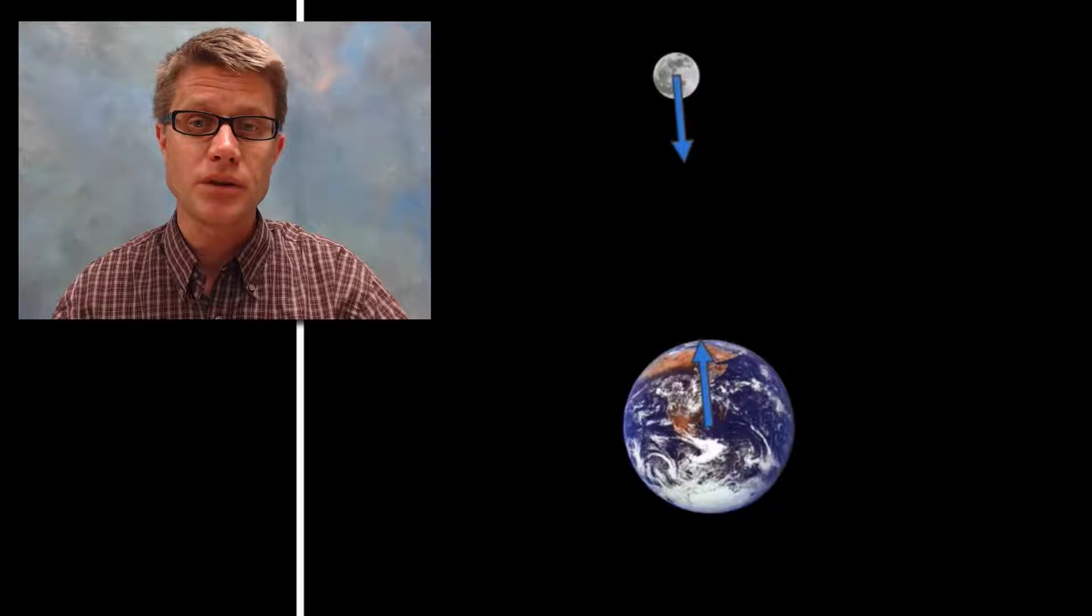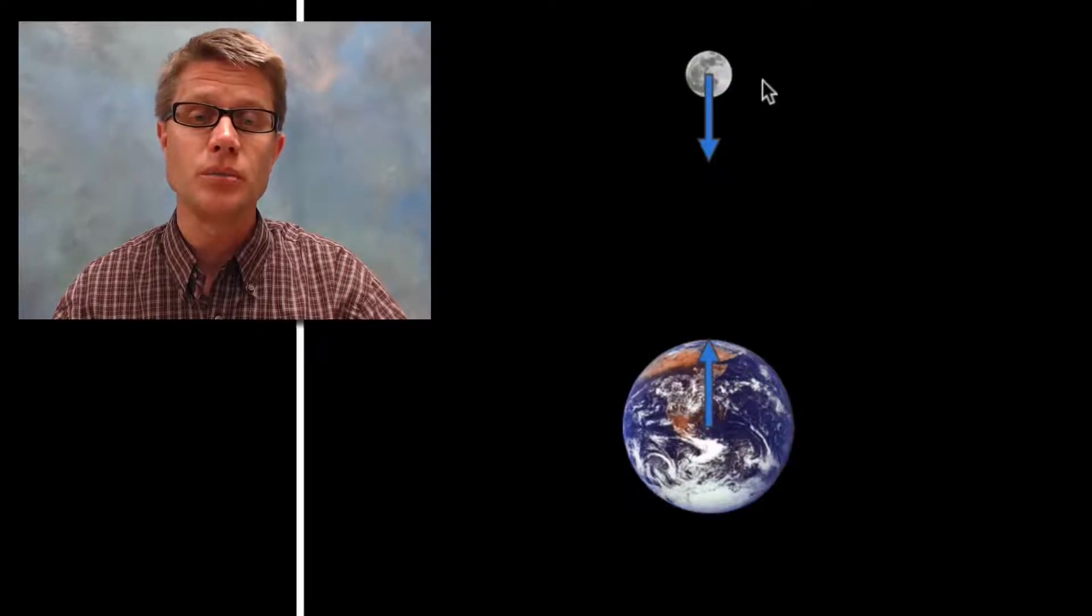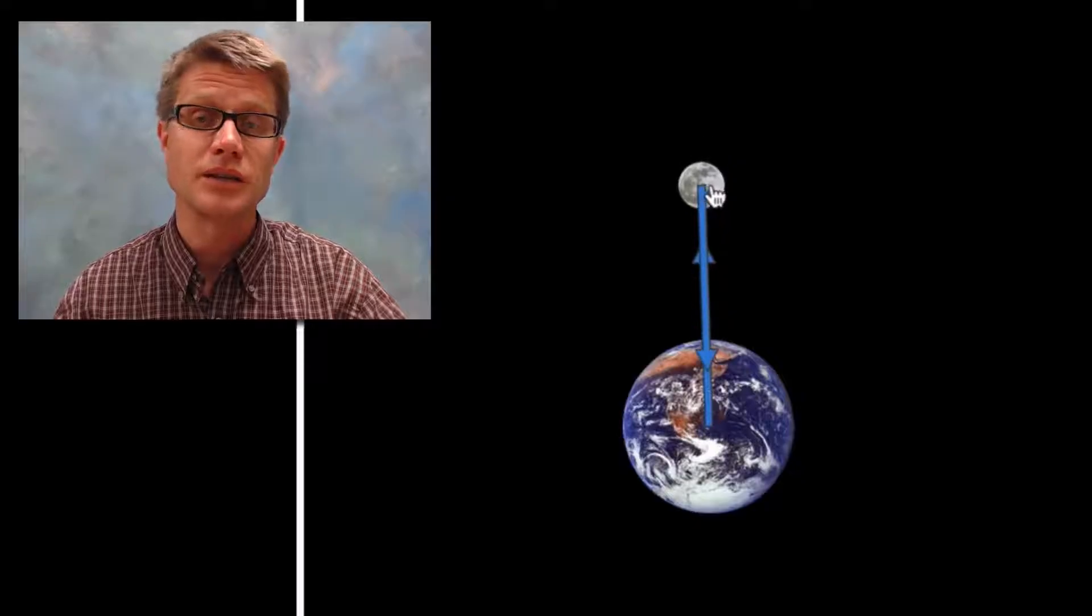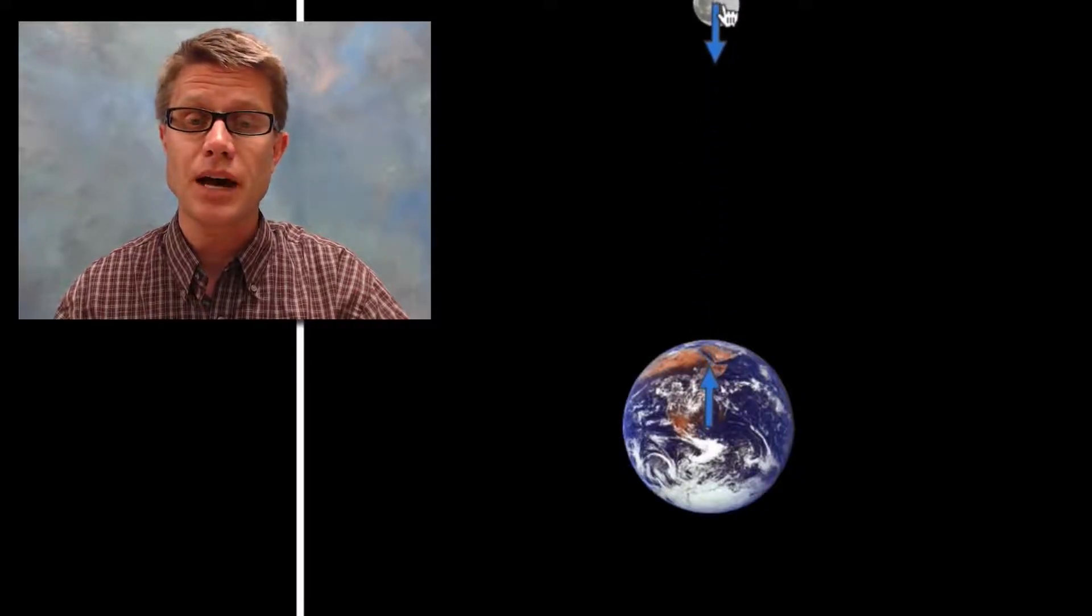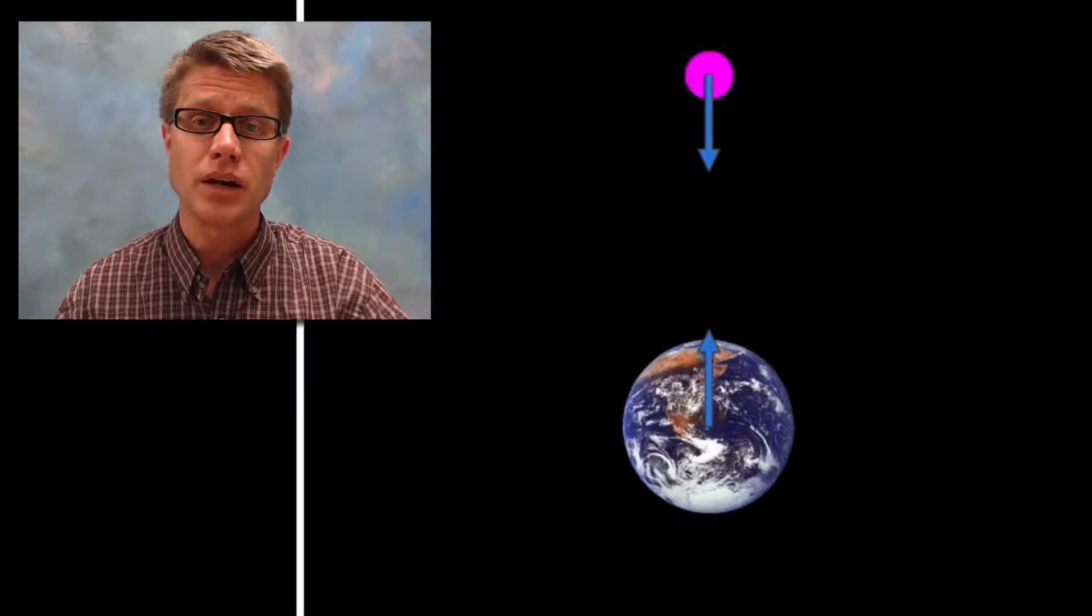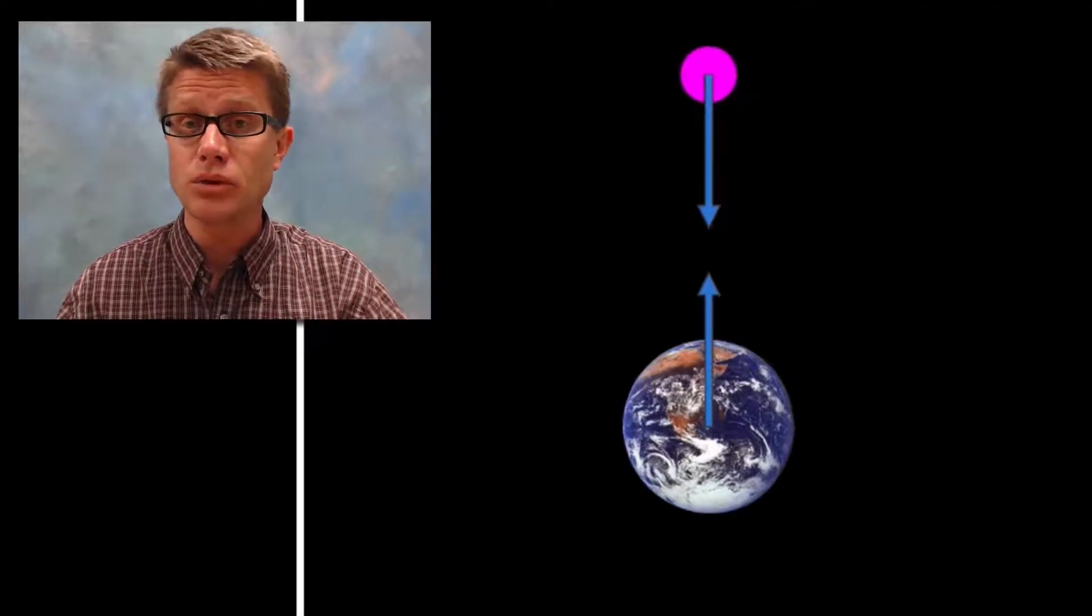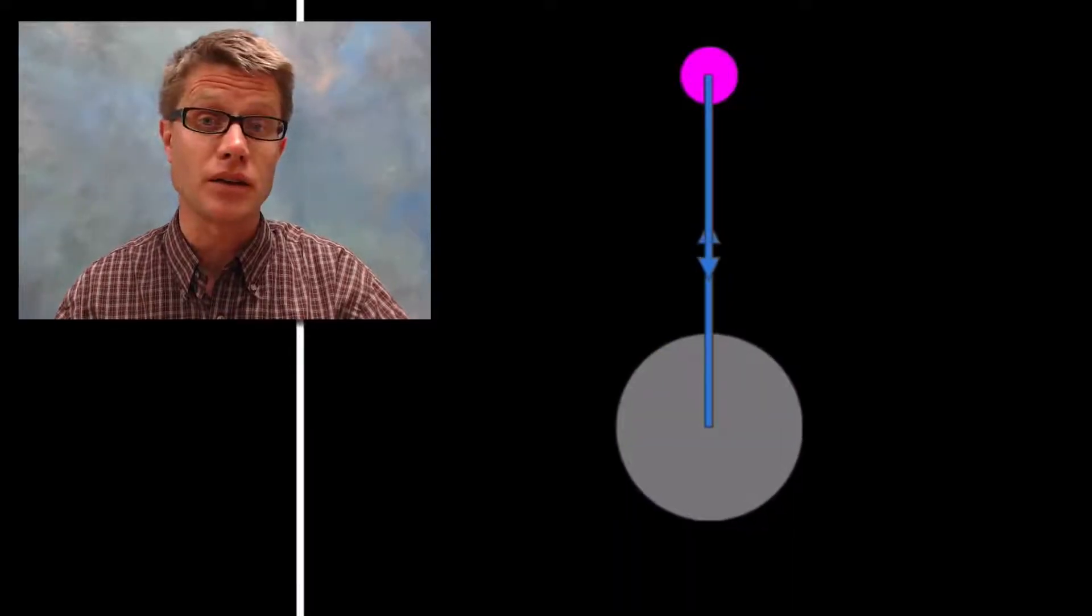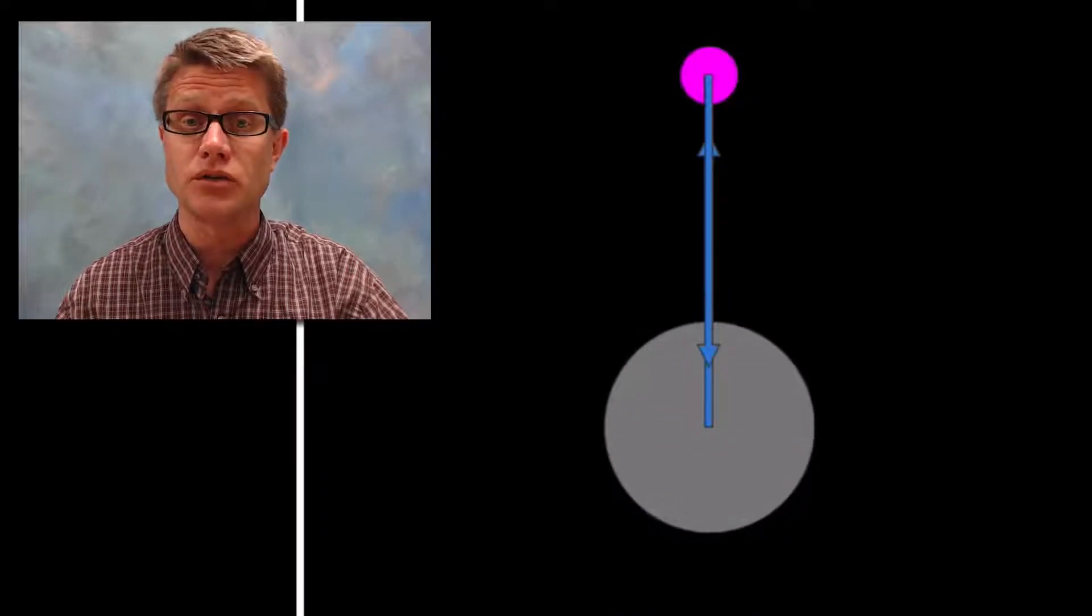But if we play around with this PHET simulation, if we move the moon closer to the earth you can see the force is increasing. It has greater strength. And as we move it away it becomes less. How else could we change the gravitational field strength? We could increase the mass of the moon for a greater force. We could increase the mass of the earth as well and there's going to be a greater gravitational field strength.